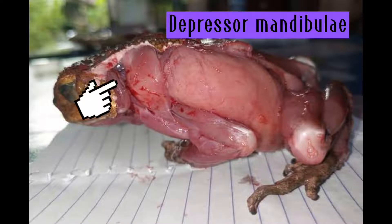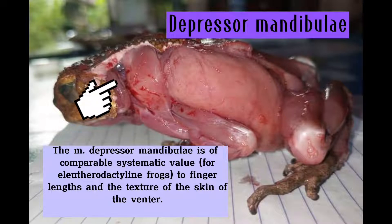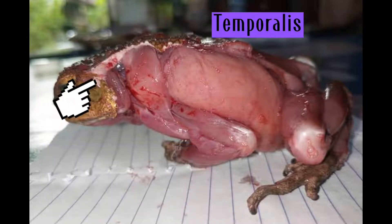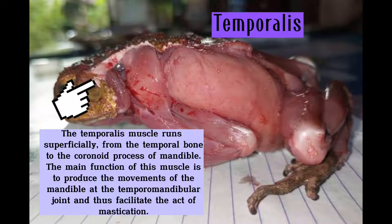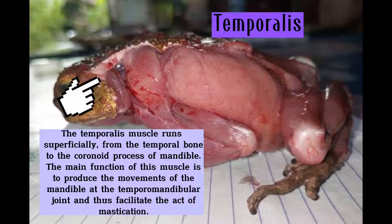The M-depressor mandibulae is of comparable systematic value to finger lengths and the texture of the skin of the ventral surface. The temporalis muscle runs superficially from the temporal bone to the coronoid process of the mandibule. The main function of this muscle is to produce movements of the mandibule at the temporomandibular joint.